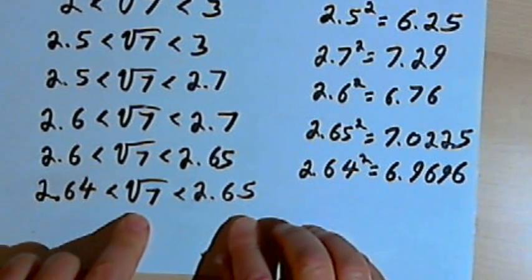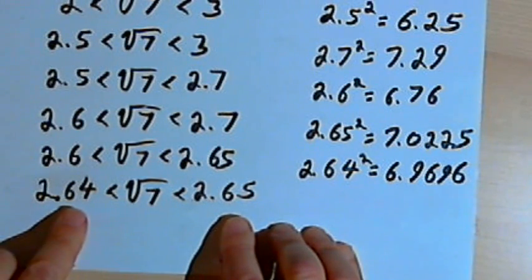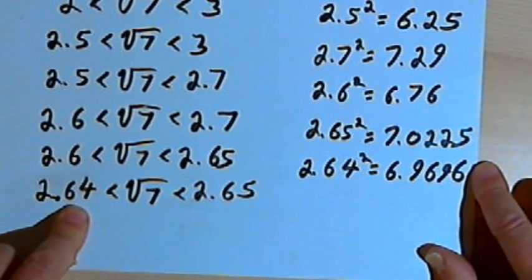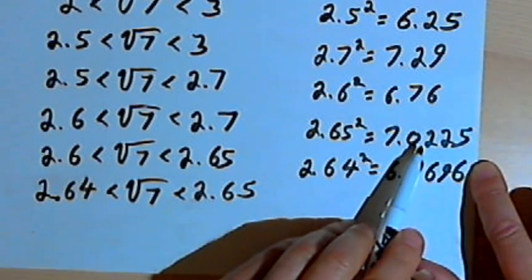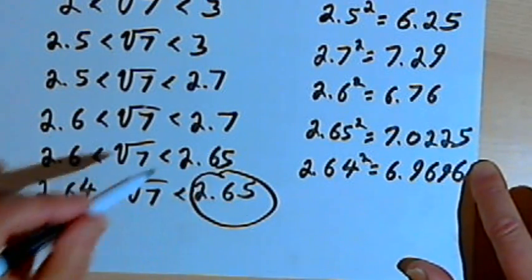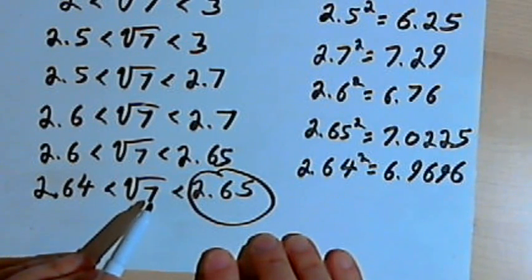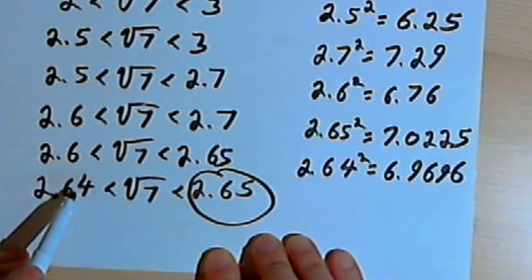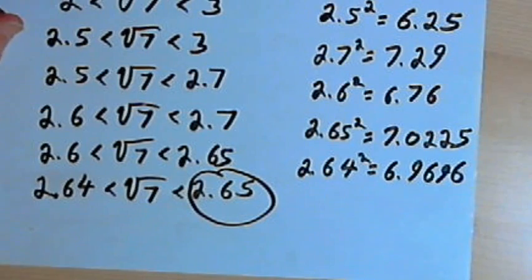If I want an approximation to two decimal places, it's either 2.64 or 2.65. Looking at their squares, 2.65 squared came really close to 7, so 2.65 is the approximate square root of 7 to two decimal places. I could continue this and go out three decimal places by looking for numbers between 2.64 and 2.65, but at this point I think you understand the process, so we'll leave it at that.